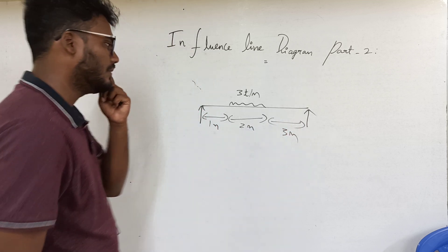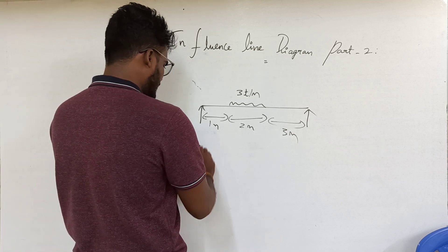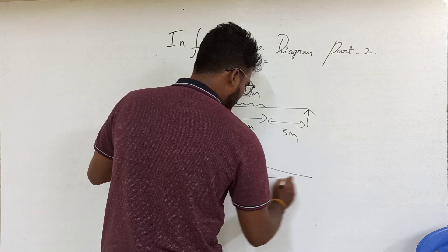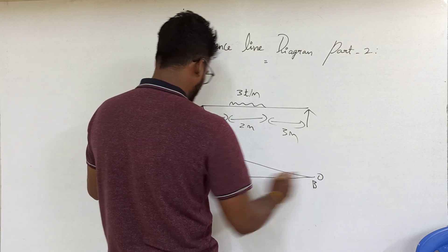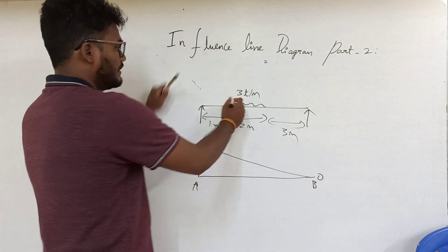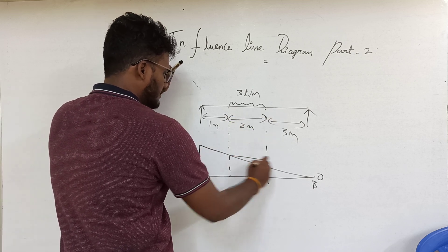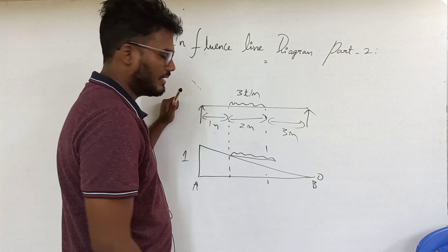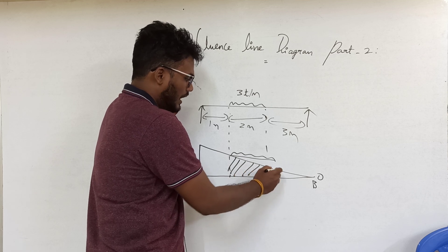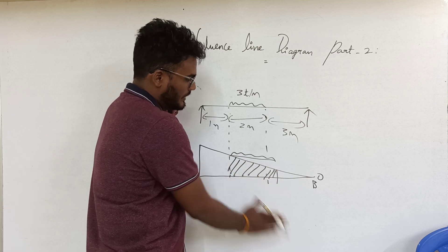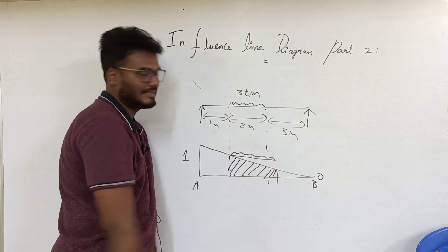Now we can use ILD for RA. What is ILD for RA? That is 1 at A and 0 at B. So A is 1, B is 0. In the zone where UDL is occurring, we should find the area of the ILD and multiply that with the intensity of load — it is not vertical load into ordinate.